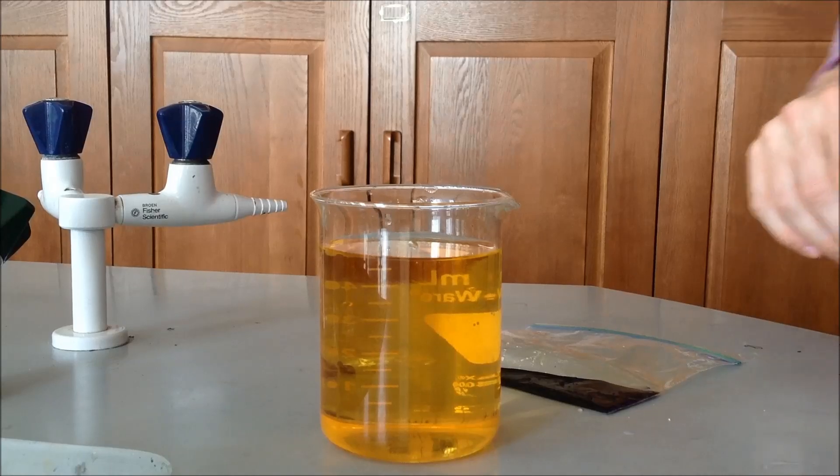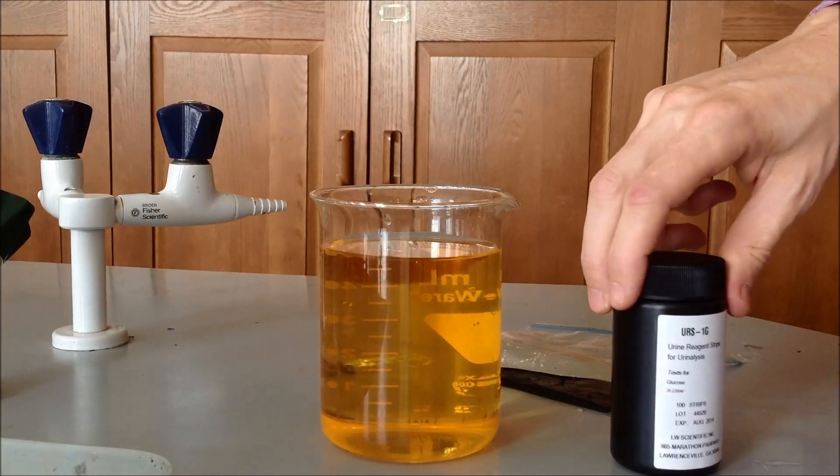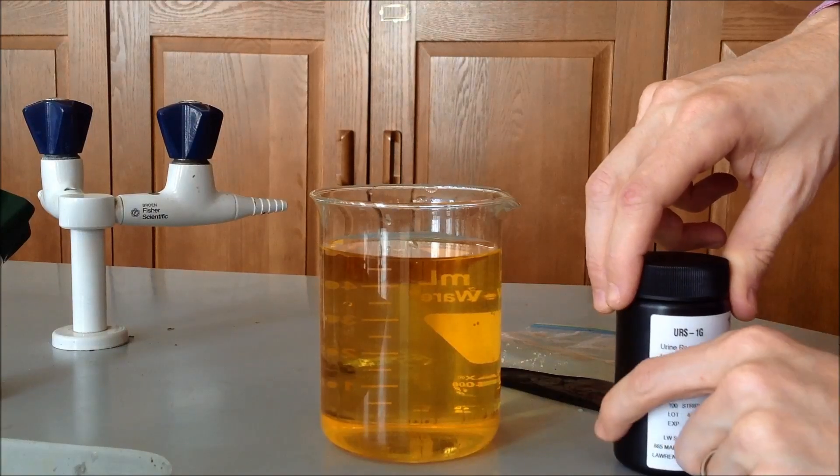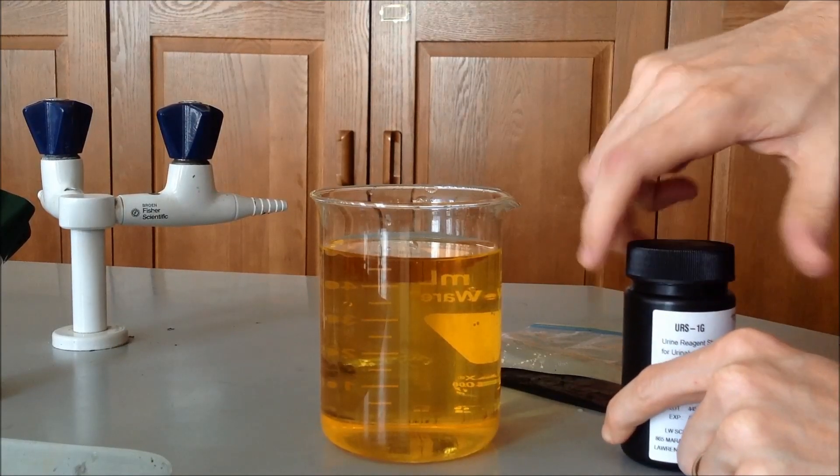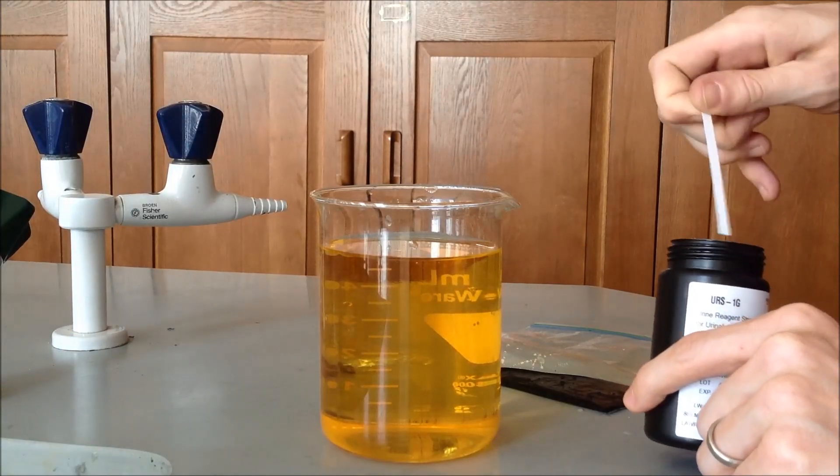And then we will also do the glucose tests with the glucose testing strips. So we'll just take one of these things out, show you the initial color. We'll dip it into the beaker solution and then let it rest for a second and we'll look at the color.